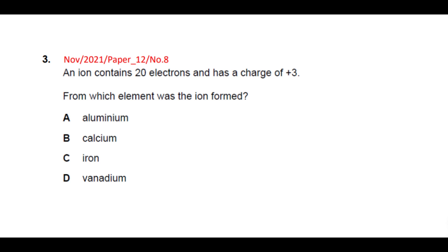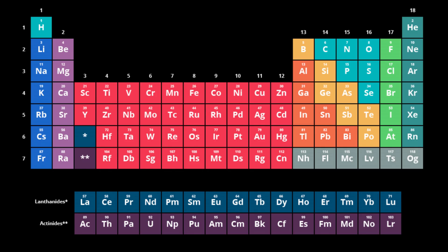Looking at the periodic table, vanadium is the atom that has 23 electrons. When it forms an ion with a plus 3 charge, it has lost 3 electrons and is left with 20 electrons. So the answer is D for this question.